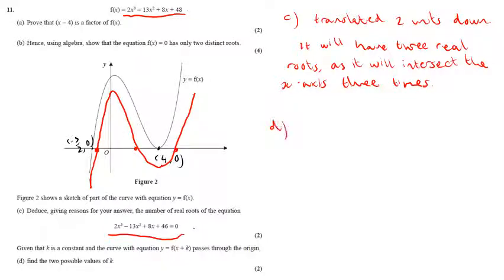And then for part D, we have given that k is a constant. The curve of the equation y equals f of x plus k passes through the origin. Right. OK, so what we need to think about is how my original curve could pass through the origin, which is here.